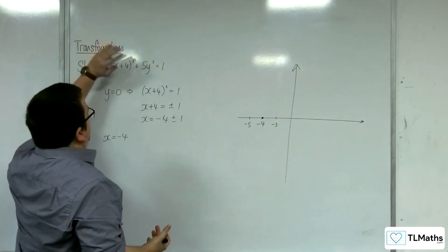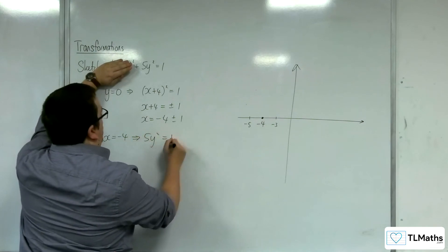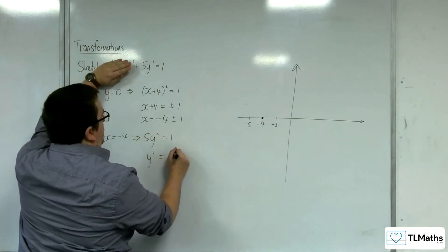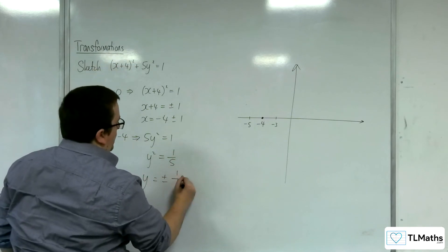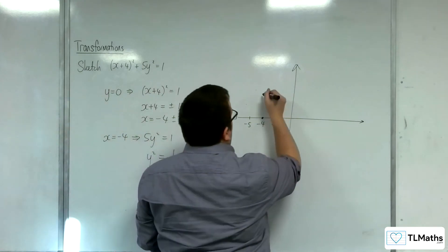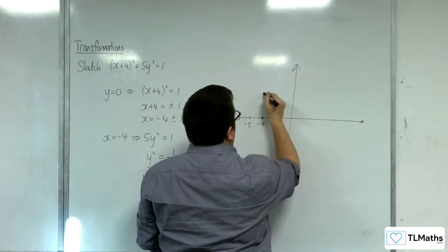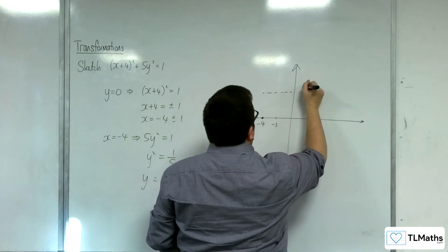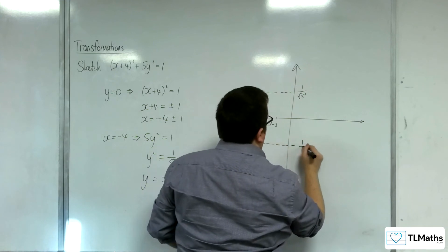So, that will knock out that bracket, and we'll have 5y squared equals 1. So, y squared is equal to 1 fifth. So, y is equal to plus or minus 1 over root 5. So, this point and this point. So, that will be at 1 over root 5. And that will be minus 1 over root 5.